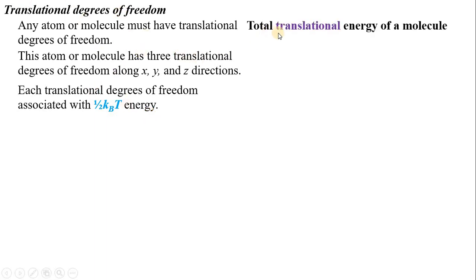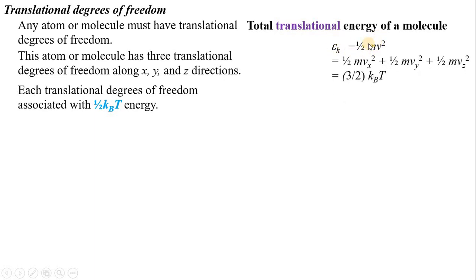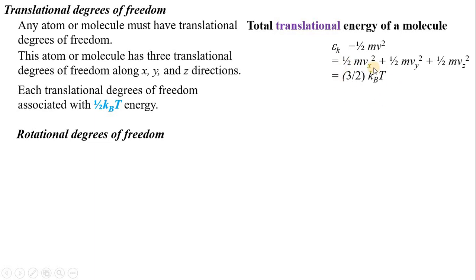The total translational energy of a molecule is epsilon k equal to ½ m v² = ½ m vx² + ½ m vy² + ½ m vz². Each component contributes ½ k_B T, so three components give 3 × ½ k_B T = 3/2 k_B T. The total translational kinetic energy is 3/2 k_B T.